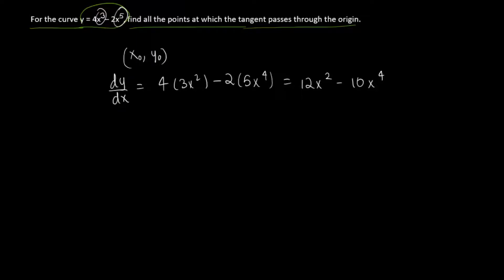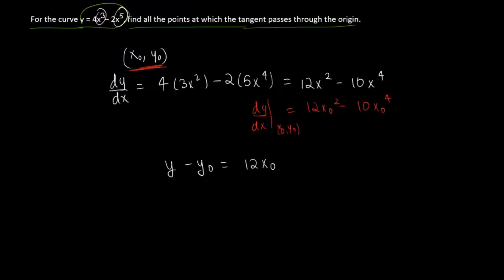Now to calculate a general point (x₀, y₀): at x₀, y₀, the slope of the tangent is equal to 12x₀² - 10x₀⁴. Using the point-slope formula, we can write the tangent equation as y - y₀ = (12x₀² - 10x₀⁴)(x - x₀). This gives us the tangent at point (x₀, y₀).